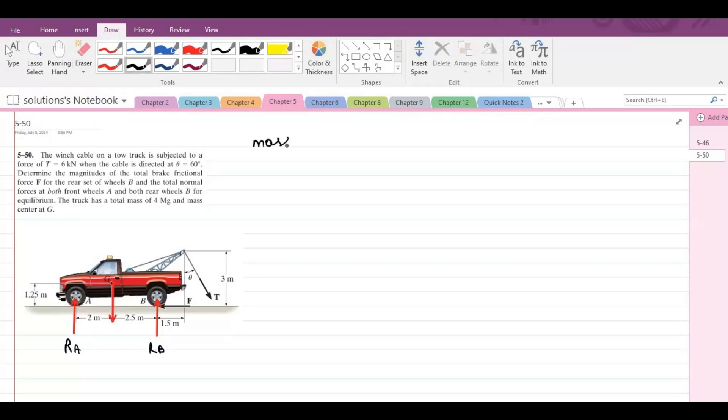And the mass is equal to 4×10^6 grams, which means it is equal to 4×10^3 kilograms. So the W would be 4×10^3 into 9.81, so that would be 39,240 newtons.